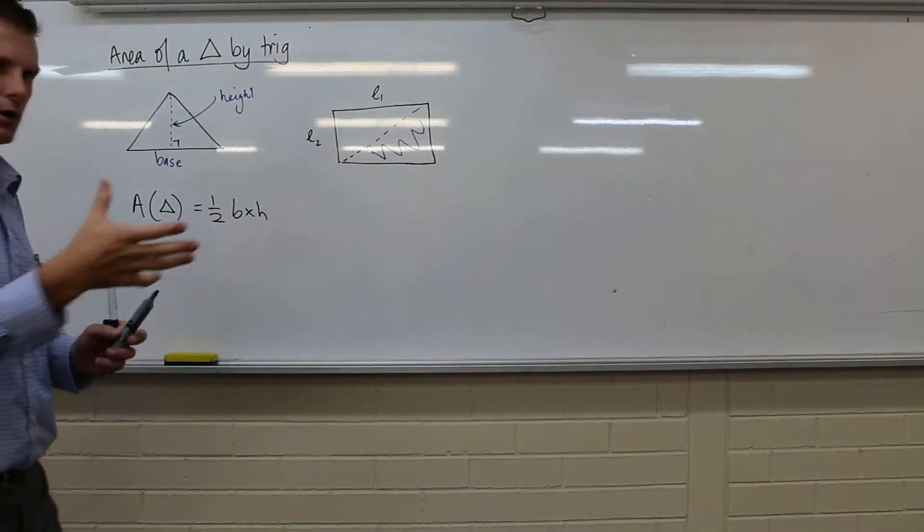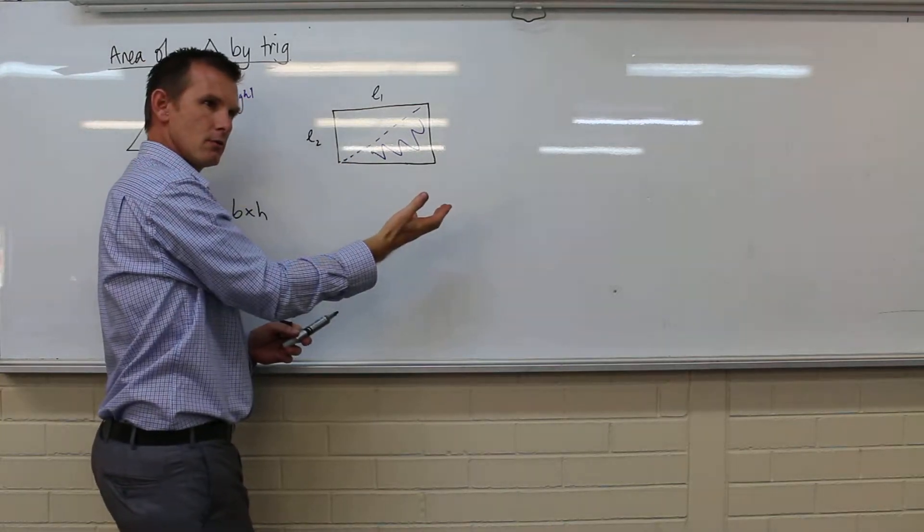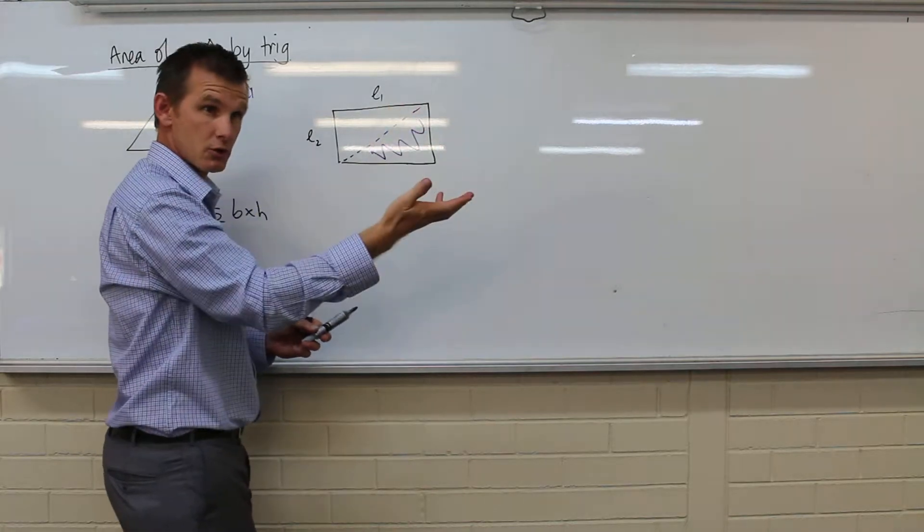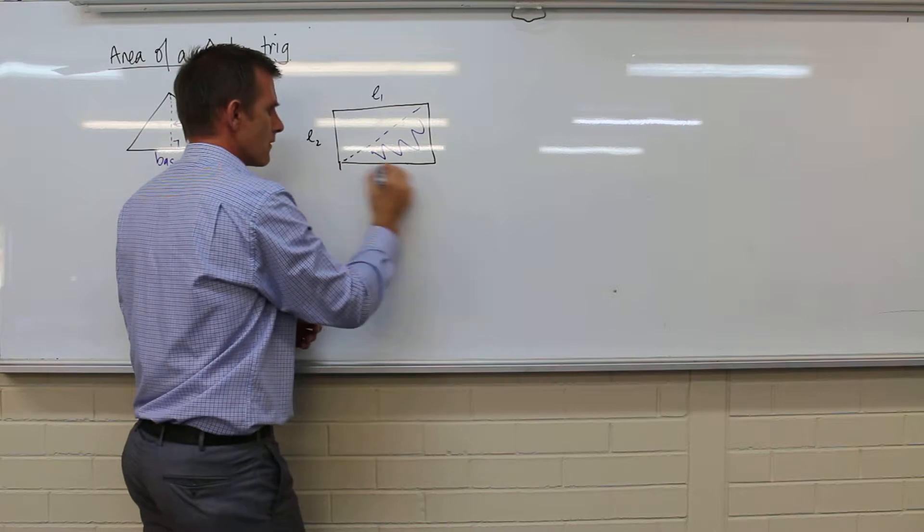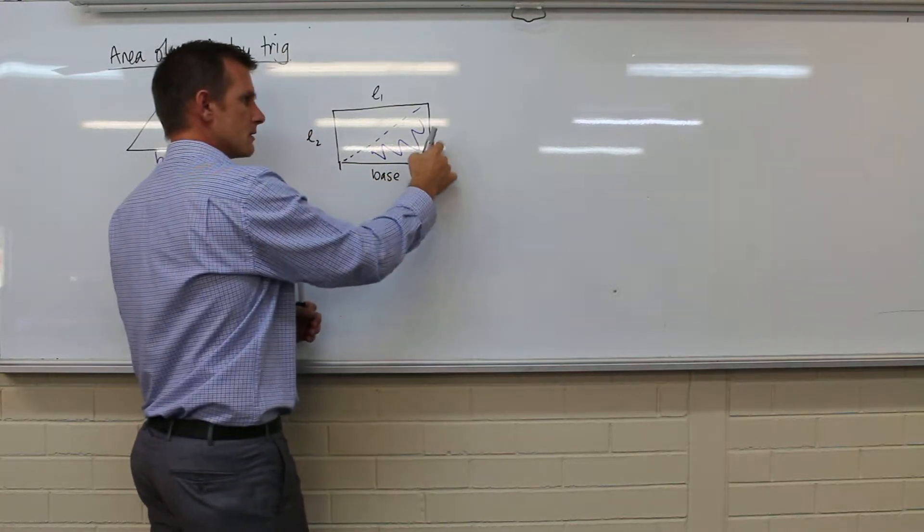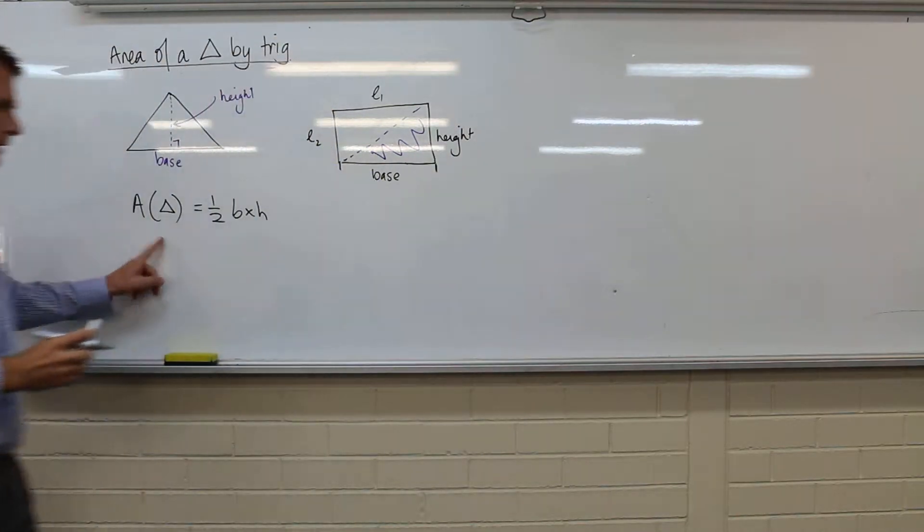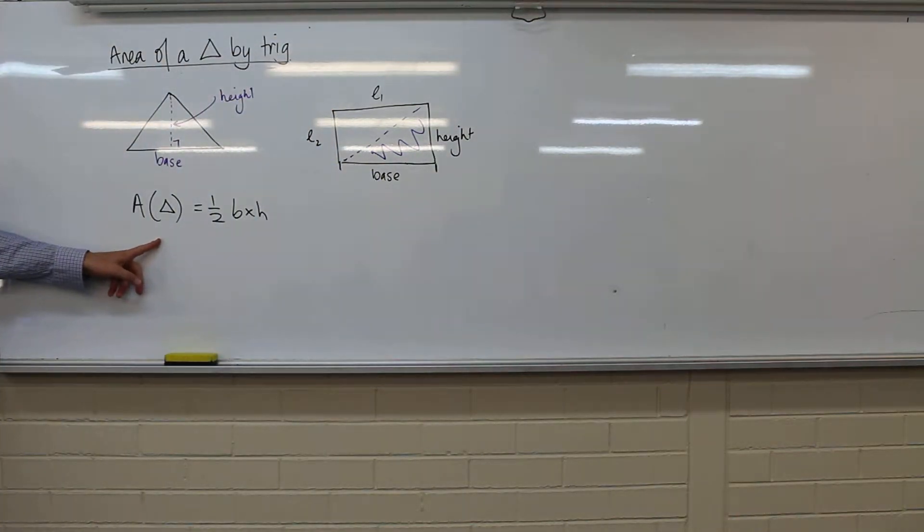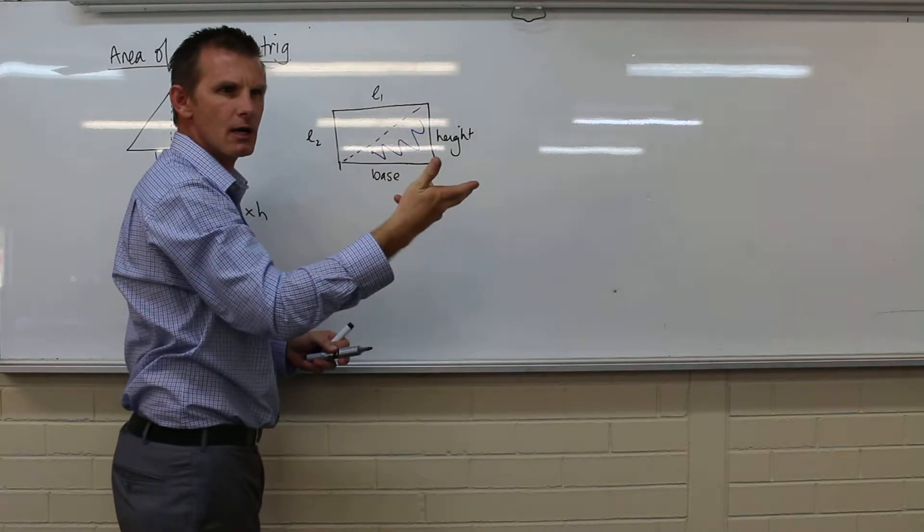then couldn't I do L1 times L2 and divide it by 2, and that would get that area which is a triangle. Now when we look at this purple triangle here, isn't that distance there really the base of the triangle, and isn't this distance here really the height of the triangle, getting us that half base times height idea. So that's where the formula comes from originally, and it doesn't matter if the triangle is a different shape or whatever, the same thing works.